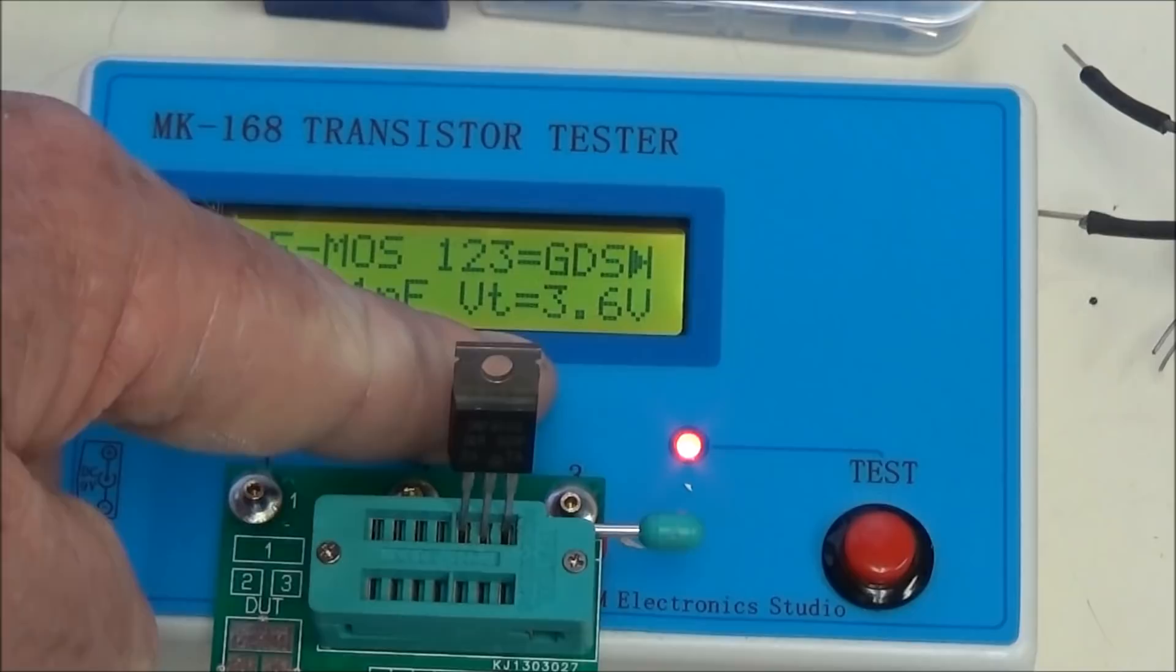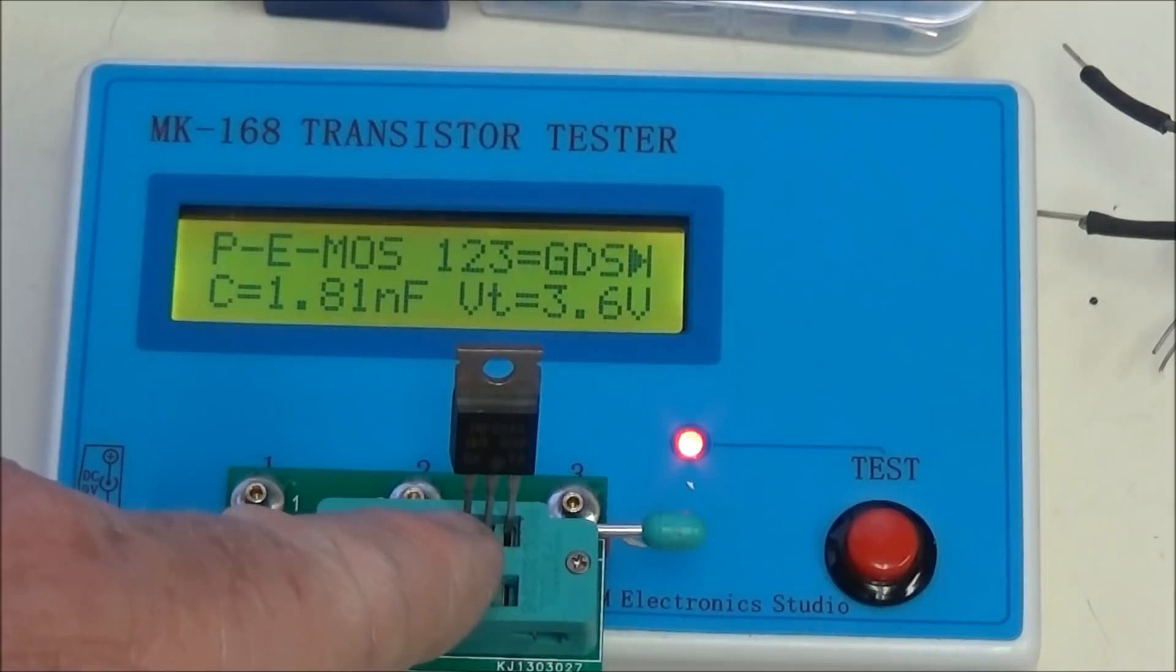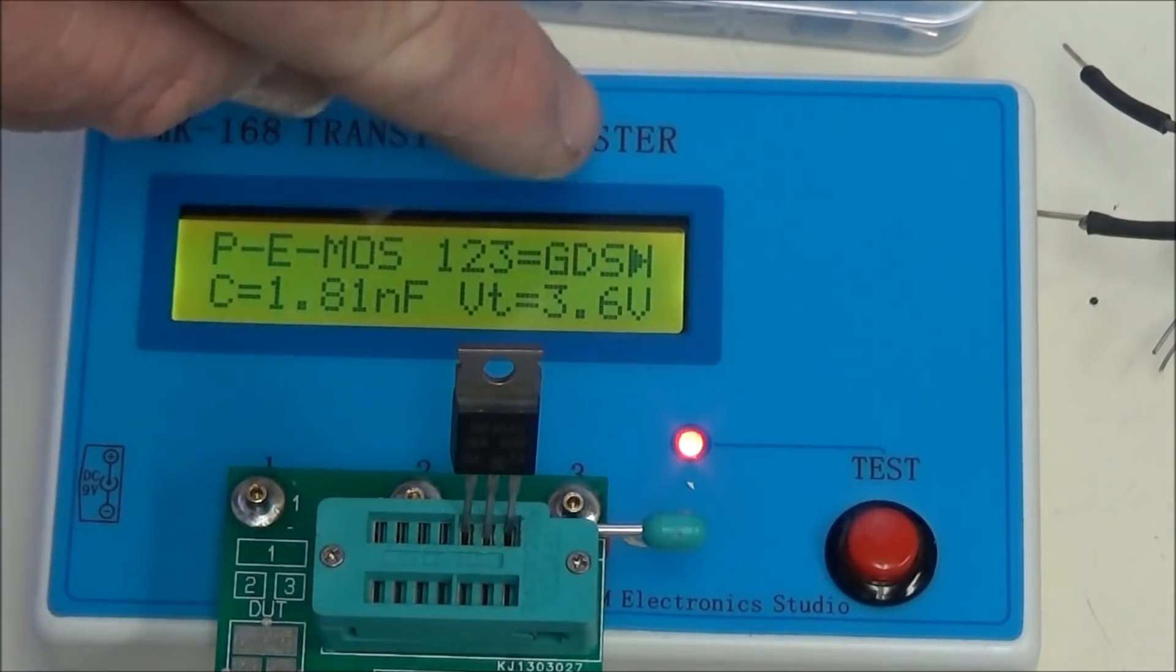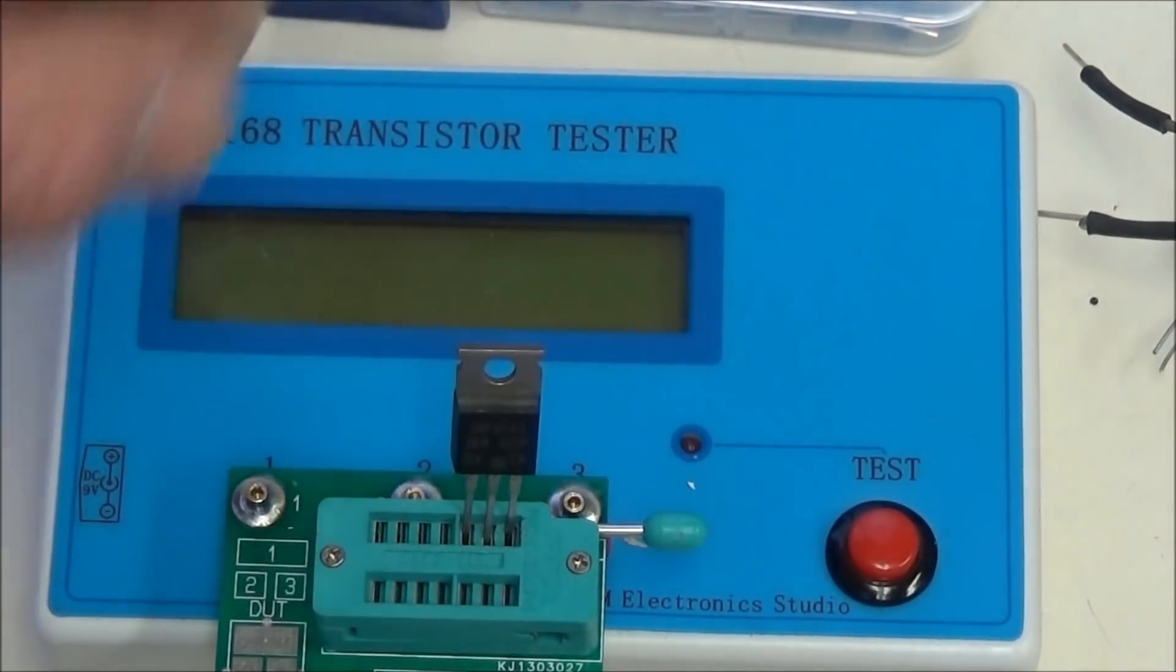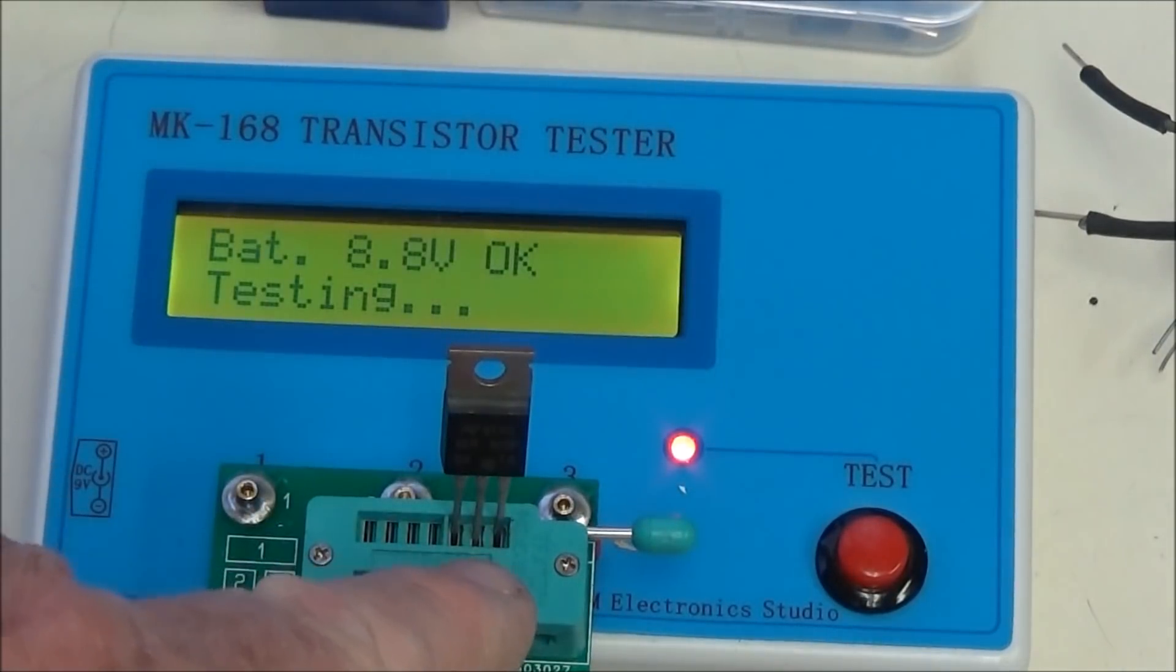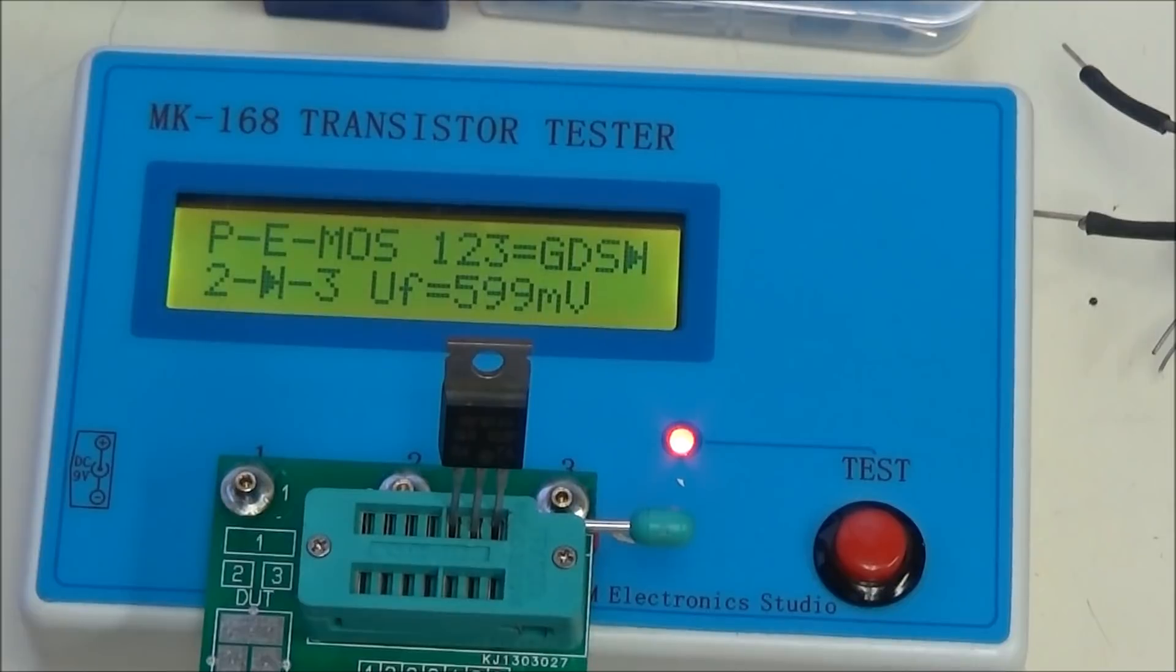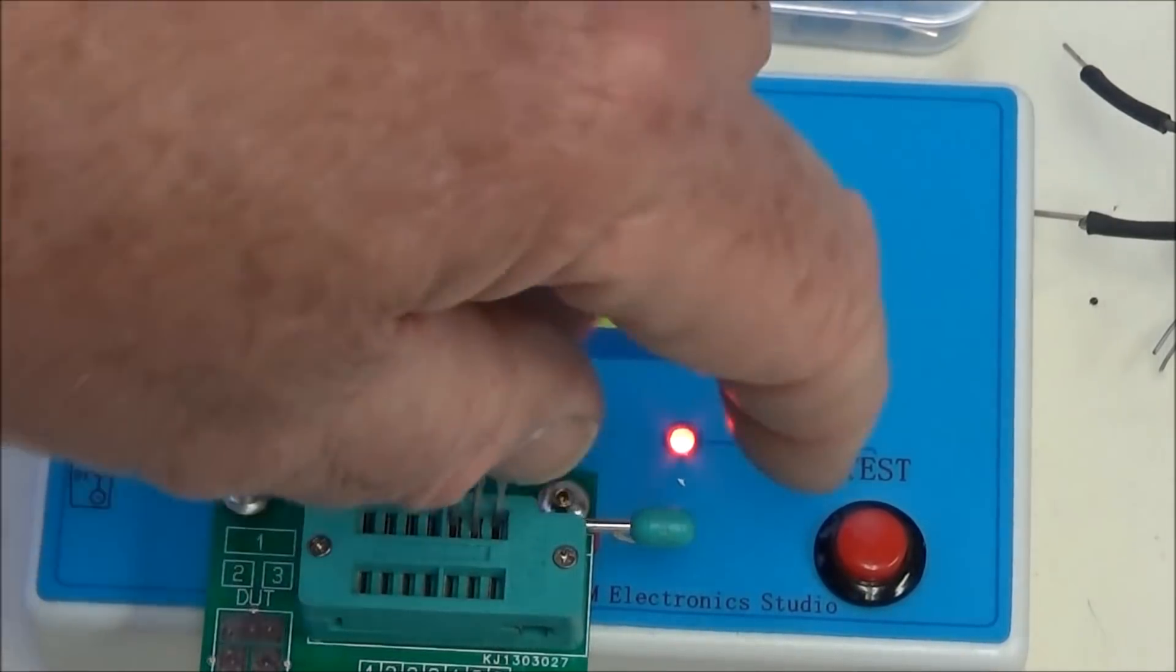This is your source gate capacitance. VT is your turn-on voltage. So this thing turned on at 3.6 volts. You'll see 1-2-3 refers to 1-2-3 on the socket. It tells you where the drain, the gate, and the source are. So this helps you locate where your pin connections are. 1-2-3 is gate, source, drain, which is correct.